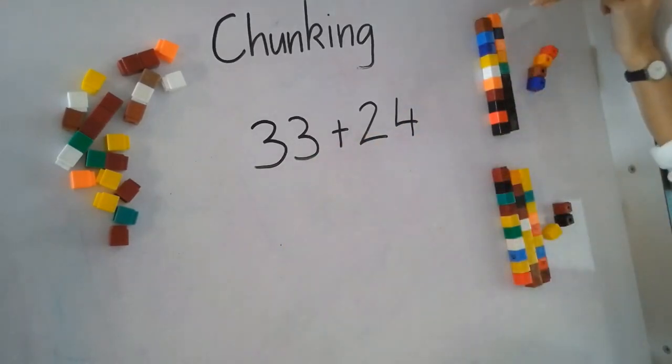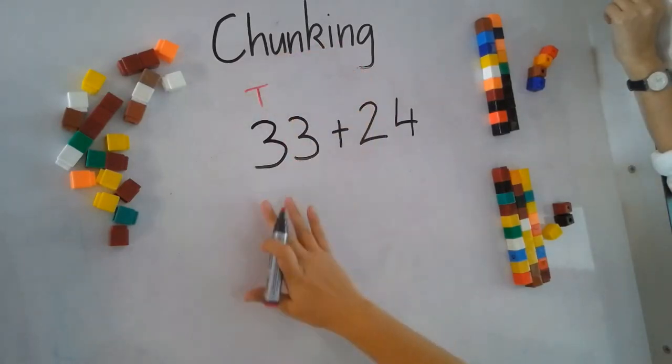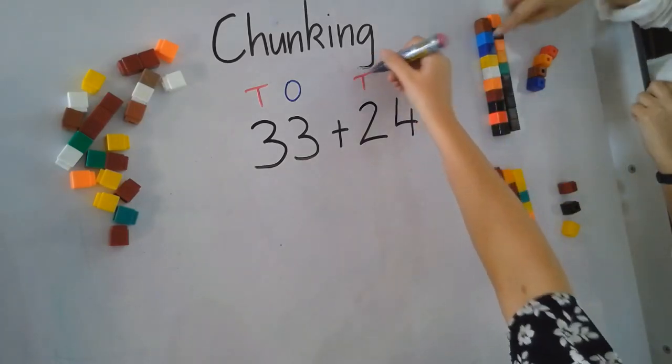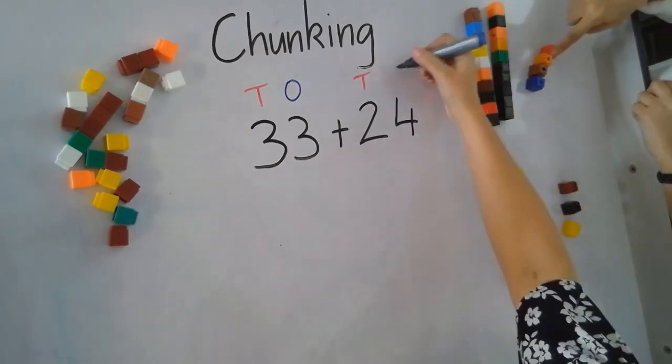When we are doing our chunking strategy boys and girls, we need to first sort it out into tens and ones. So 33 has three tens, which is 30, and three ones. 24 has two tens, which is 20, and four ones.